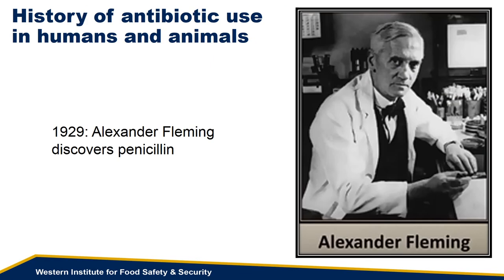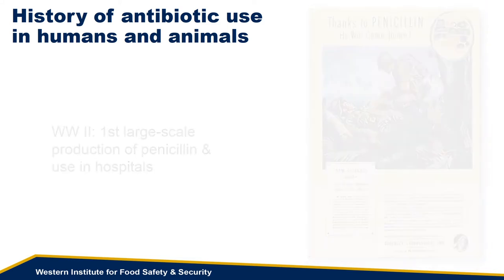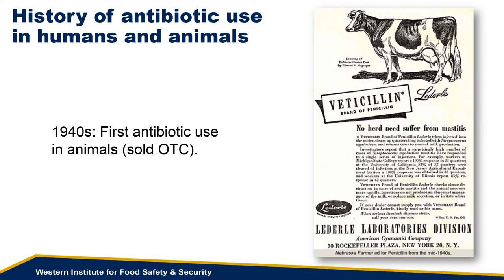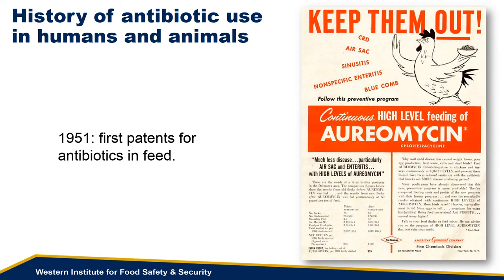In spite of the fact that microbes have been producing antibiotics for millions of years, humans haven't recognized or used them until recently. Alexander Fleming first described the action of an antibiotic, penicillin, in 1929, but it wasn't until World War II that we saw the first large-scale production of penicillin and its use in hospitals. Antibiotics were first used to treat infections in animals in the 1940s. And finally, in 1951, the first patents were filed for the use of antibiotics in feed to treat disease and increase weight gain.